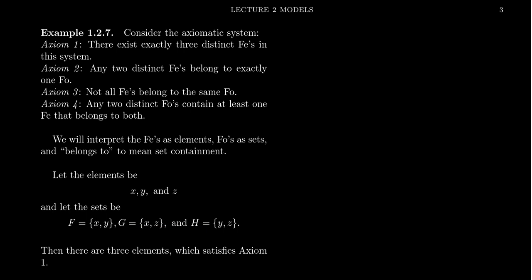But let's check that the axioms are verified. There are exactly three fees. Yep, the three of them are right here. Any two fees belong to exactly one foe. So if you take X, Y, F is the only one that contains it. If you take X, Z, G is the only one that contains it. If you take Y, Z, that pair, H is the only foe that contains it.